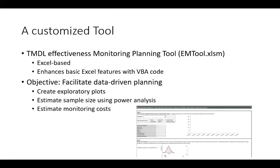The EPA has developed a TMDL effectiveness monitoring tool called emtool.xlsm — an Excel file using VBA coding to enhance Excel features. It's been posted on LON-CAPA; you won't need to use it, but feel free to download and explore it. You can input data from lab three, create exploratory plots, estimate sample size, and even estimate monitoring costs for a TMDL study.